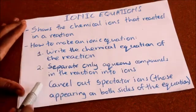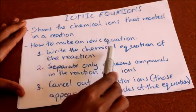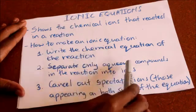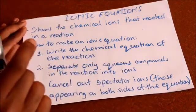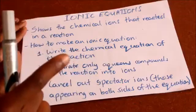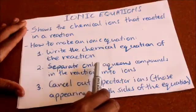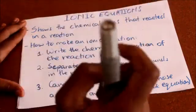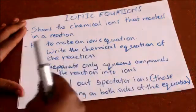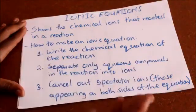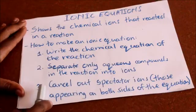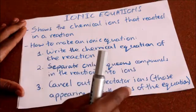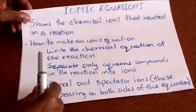Here are the simple steps to make an ionic equation. Number one: write the chemical equation of the reaction and make sure it is balanced — this is very important. Number two: separate only aqueous compounds in the reaction into ions, since in aqueous state the ions are mobile and free to move. Remember, ions are a charged species — they can be positively or negatively charged. Number three: cancel out the spectator ions, which are those that appear on both sides of the equation.